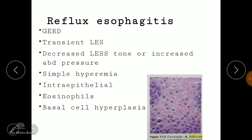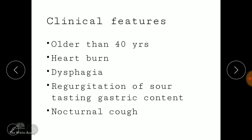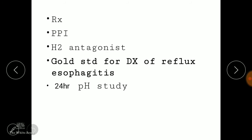Moving on to reflux esophagitis, also known as gastroesophageal reflux disease (GERD). There is transient decreased lower esophageal sphincter tone or increased abdominal pressure, causing simple hyperemia, intraepithelial eosinophils, and esophageal basal hyperplasia microscopically. Clinical features in patients above 40 years include heartburn, dysphagia, regurgitation, tasting gastric contents, and nocturnal cough. Treatment is with proton pump inhibitors and antihistamines. The gold standard for diagnosis of reflux is 24-hour pH monitoring.